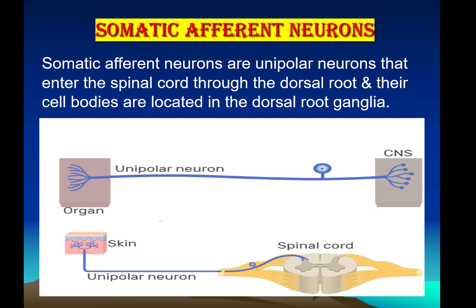Somatic afferent neurons are unipolar neurons that enter the spinal cord through the dorsal root, and their cell bodies are located in the dorsal root ganglia. Unipolar means originating from one pole — the dendrite and axon originate from the same pole of the soma. They enter through the dorsal root of the spinal cord and bring sensory information to the brain.